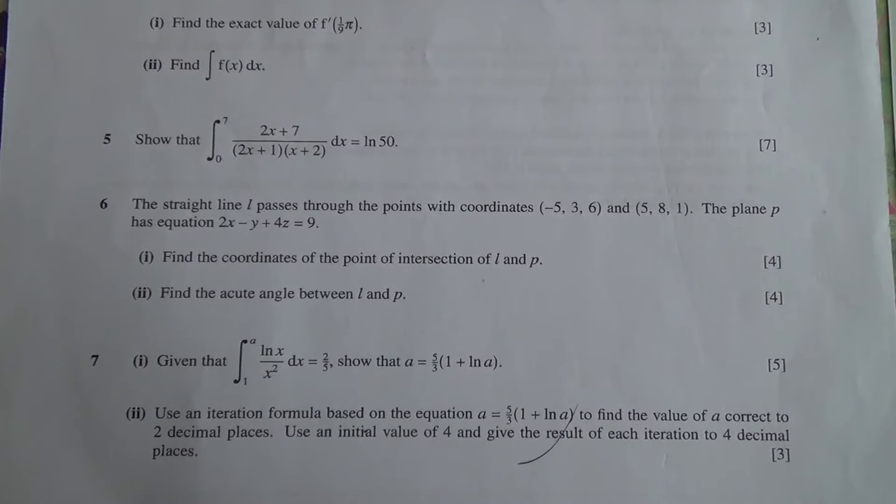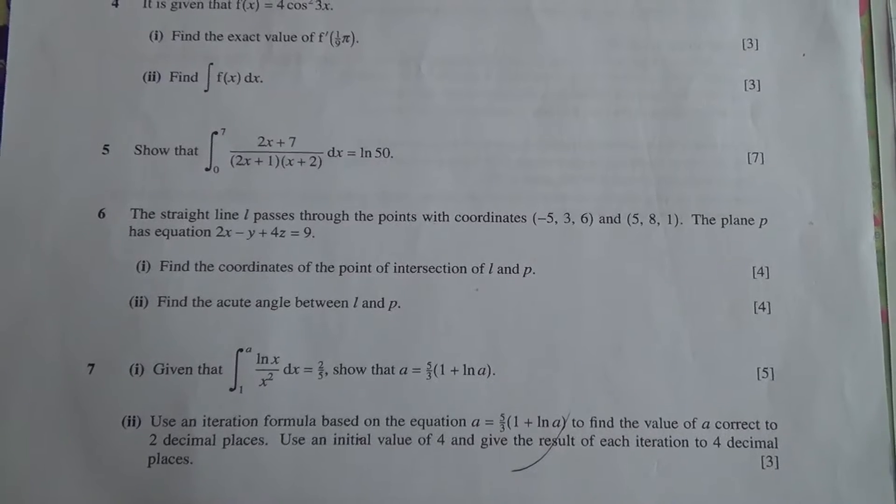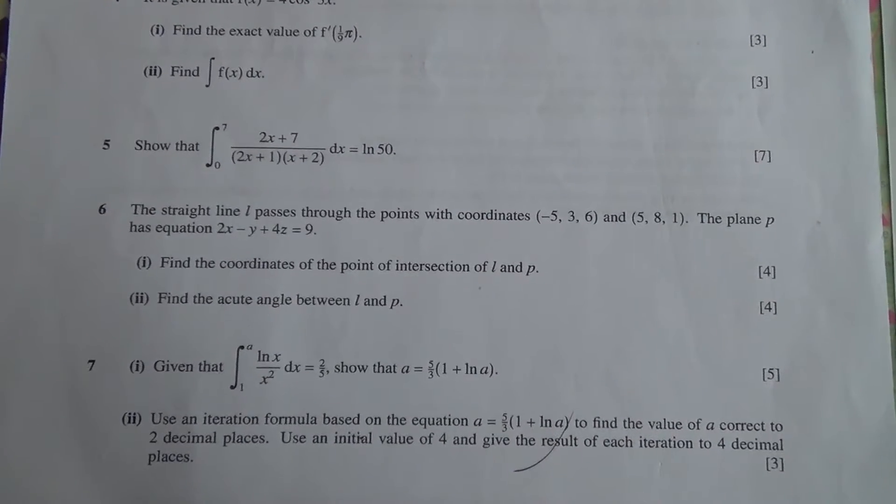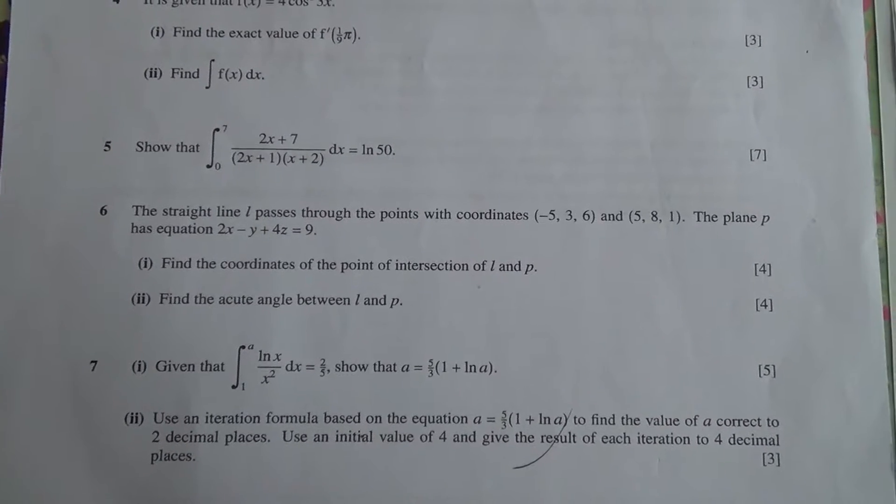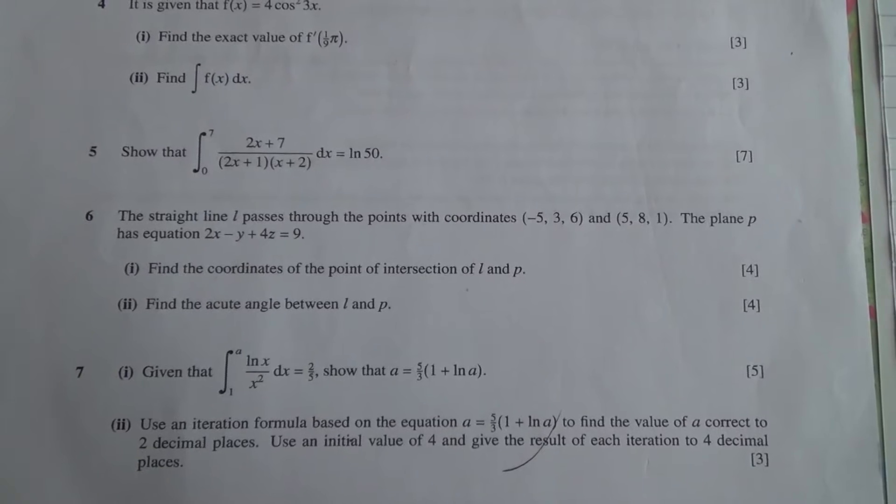Question number 6. The straight line L passes through the points with coordinates (-5, 3, 6) and (5, 8, 1). The plane P has the equation 2x - y + 4z = 9.